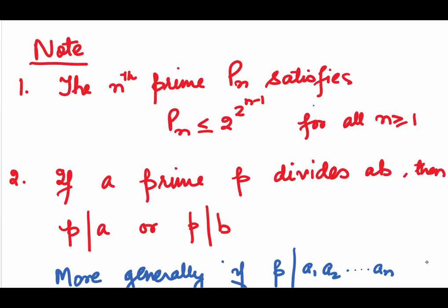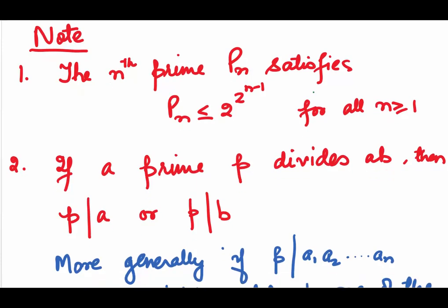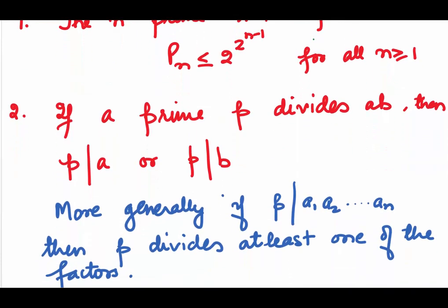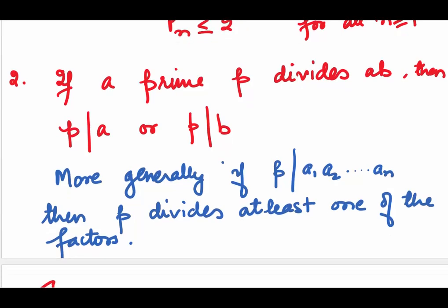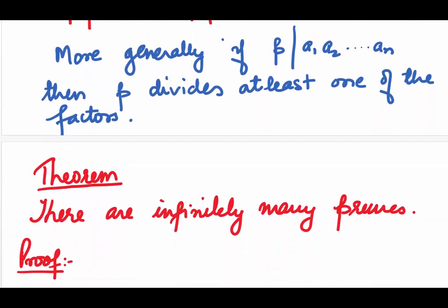Few things to note. The nth prime pn satisfies pn is less than equal to 2 to the power 2 to the power n minus 1 for all positive integers n greater than equal to 1. If a prime p divides a product ab, then p either divides a or it divides b. More generally, if p divides a1, a2, ... an, a product, then p divides at least one of the factors. These are important results.